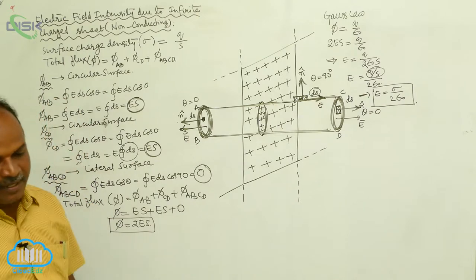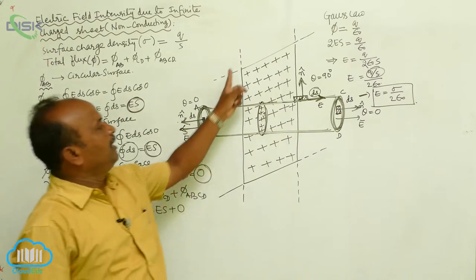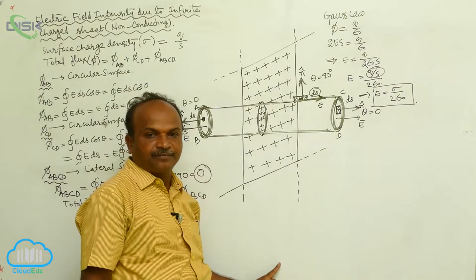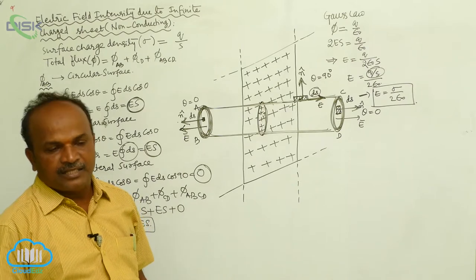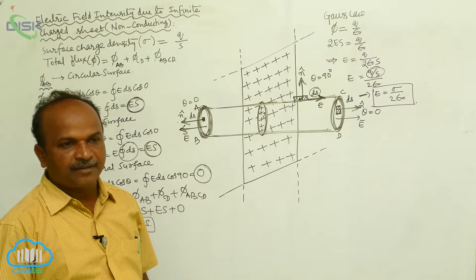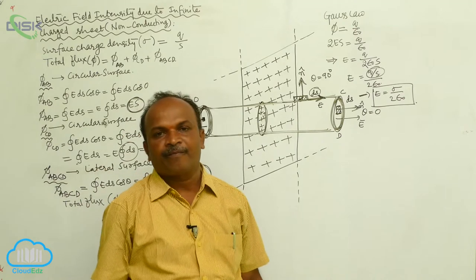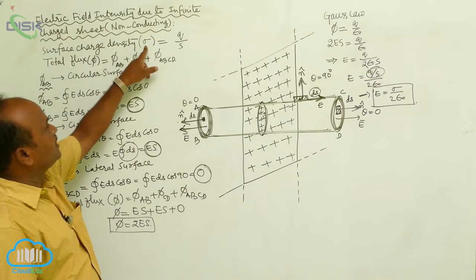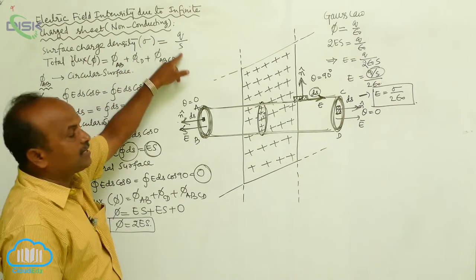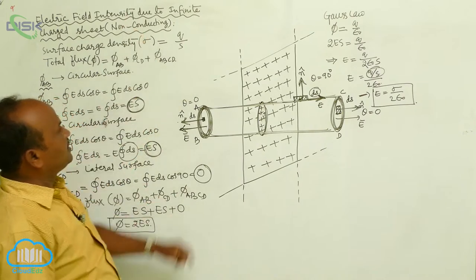Our topic is the electric field intensity due to the infinite charged sheet. The infinite charged sheet is a two-dimensional object on which charge is distributed. To describe this, we define surface charge density: sigma equals Q by S, which is charge per unit area.